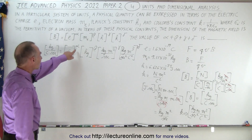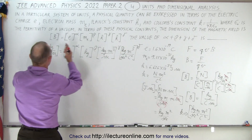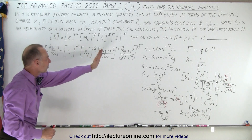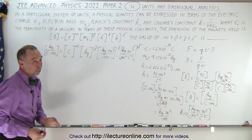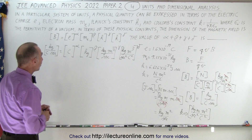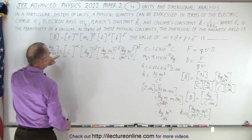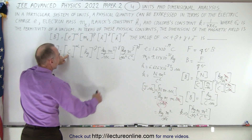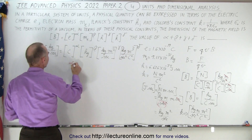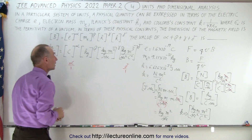We need to find the correct exponents so the right side equals the left side: kilograms per coulomb per second. We can use positive or negative exponents. Coulombs only appears in two places, and we need one over coulomb. So if alpha equals one and delta equals one, coulombs would be taken care of — alpha to the first power and delta to the first power gives one over coulomb.